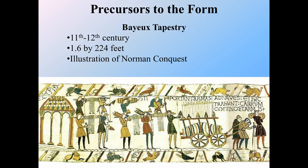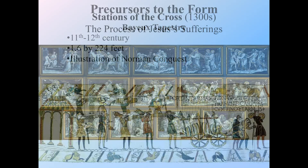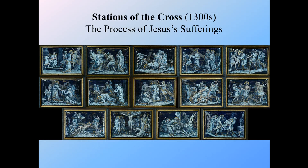Using that as our definition, the first real predecessor — some say hieroglyphics or prehistoric cave paintings — but really I would say the Bayeux Tapestry from the 11th and 12th century. It was 1.6 feet by 224 feet and illustrated the Norman conquest. As you can see in the image, it has both images and words. In the 1300s, we also see the Stations of the Cross, which, though wordless, presents a sequential series of steps telling a story — which is what we think of with comics.